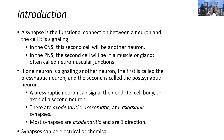A neuron can synapse on several different types of cells. If it's in the central nervous system, it's going to be synapsing to another neuron. If it's in the peripheral nervous system, it can be another different type of excitable cell — muscle, glands, or even skeletal muscle can be one of those types of tissues.